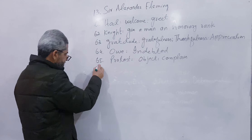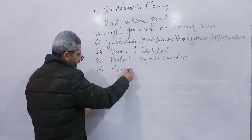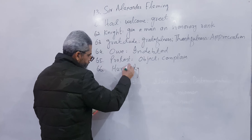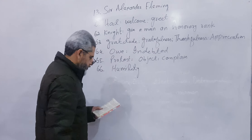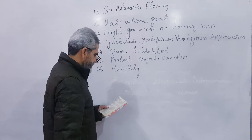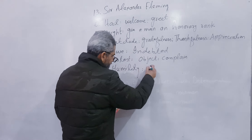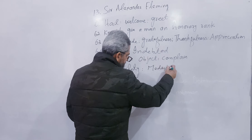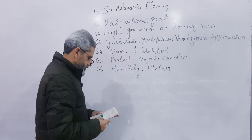Number 66: Humility — aajzi, inkisari (meekness/humility), H-U-M-I-L-I-T-Y. Write modesty.